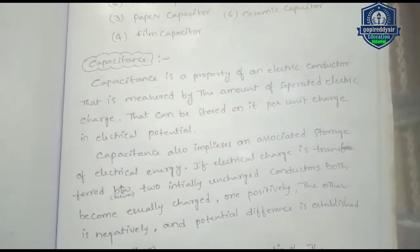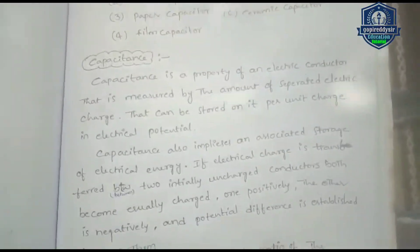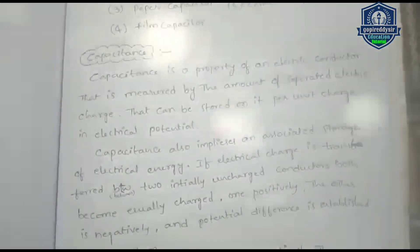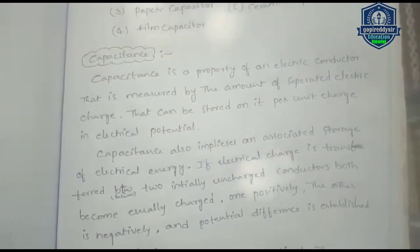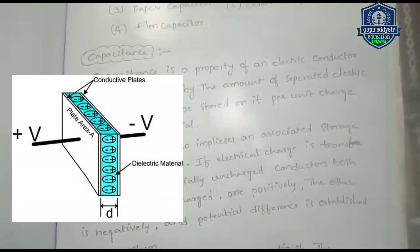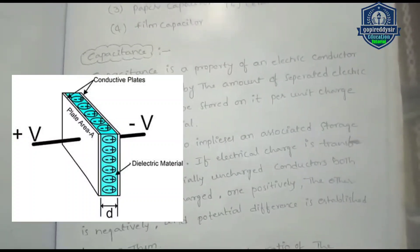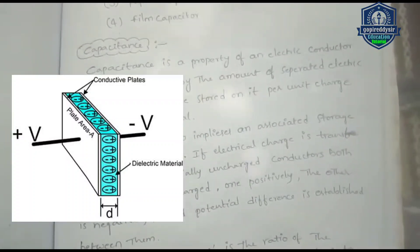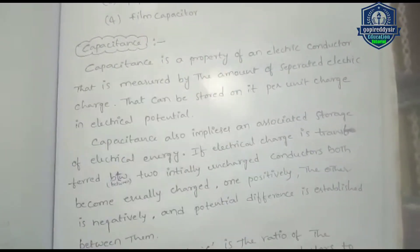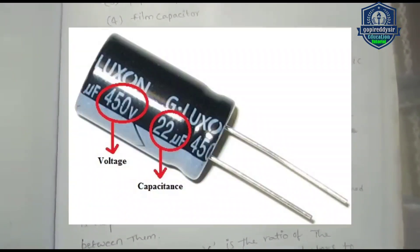The capacitance can be stored on it per unit change in electrical potential. The capacitance also implies an associated storage of electrical energy. The capacitance means electrical charge can be stored on it.